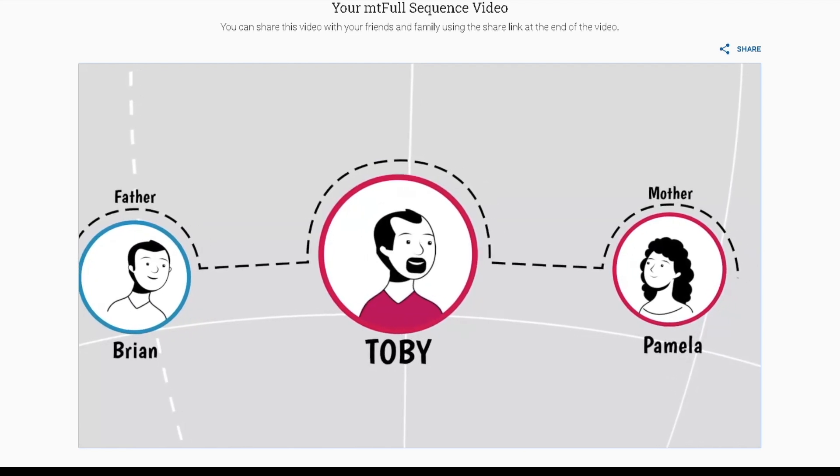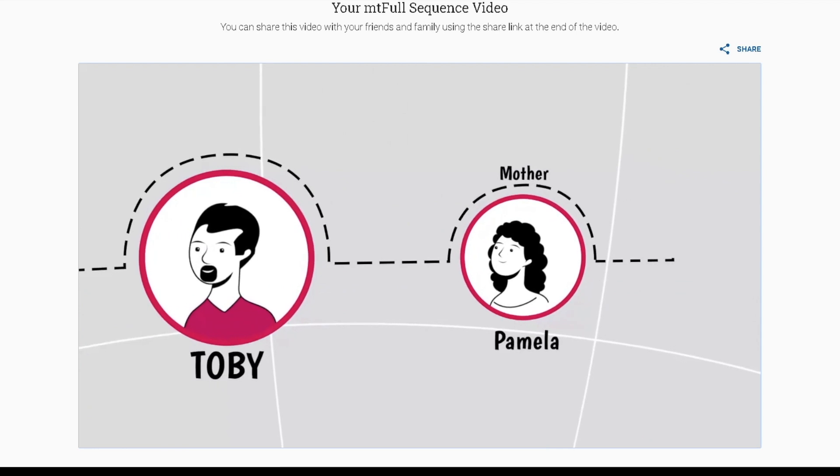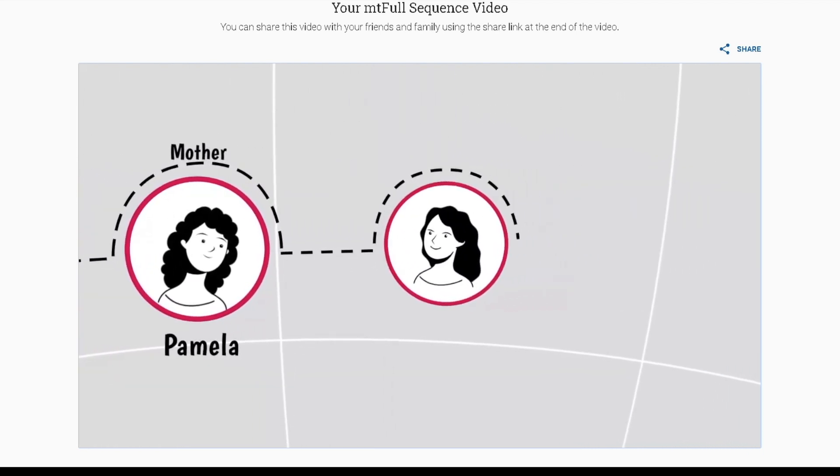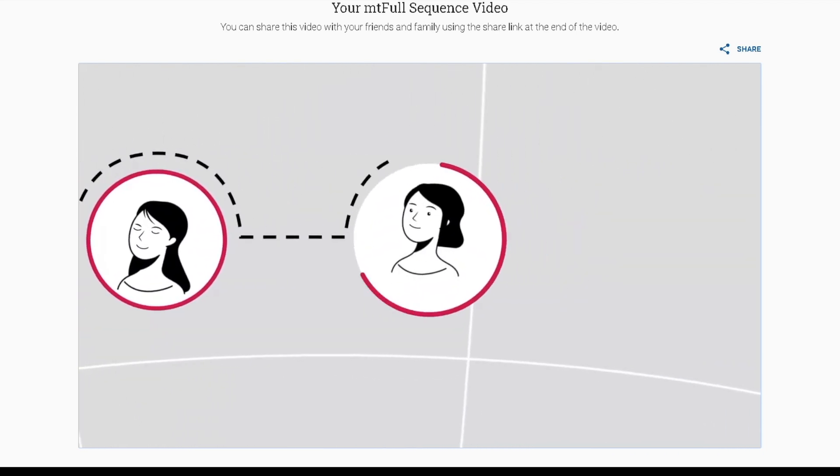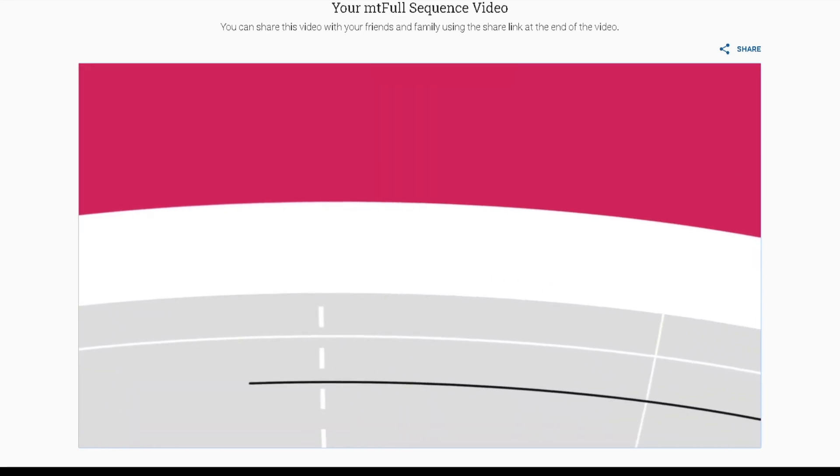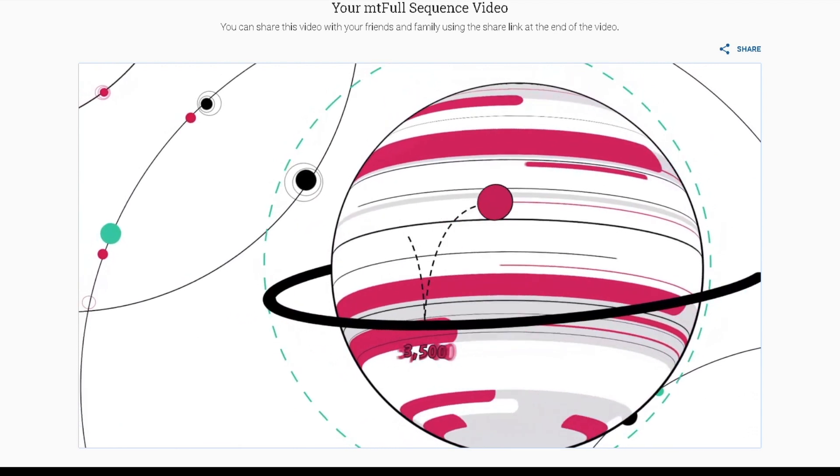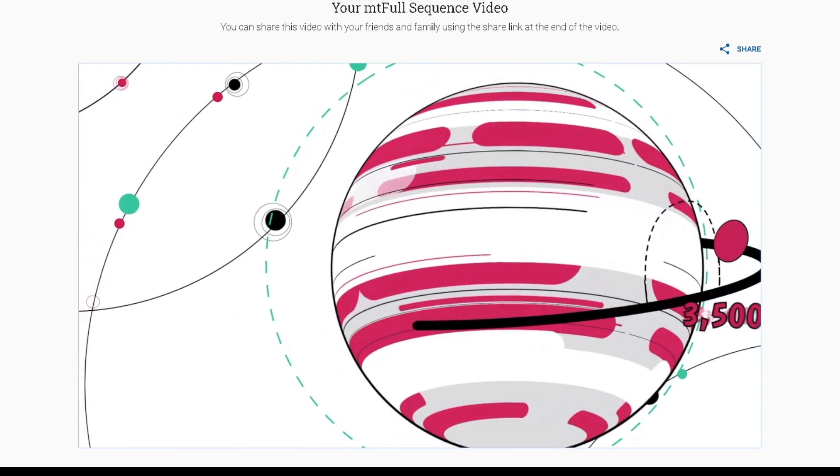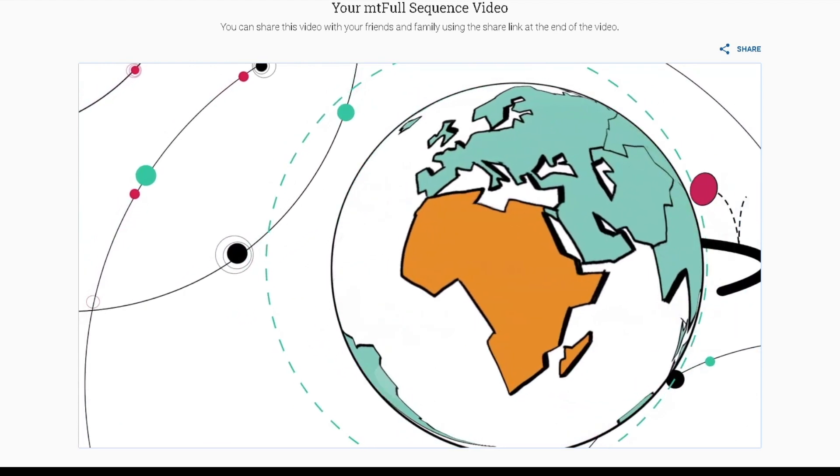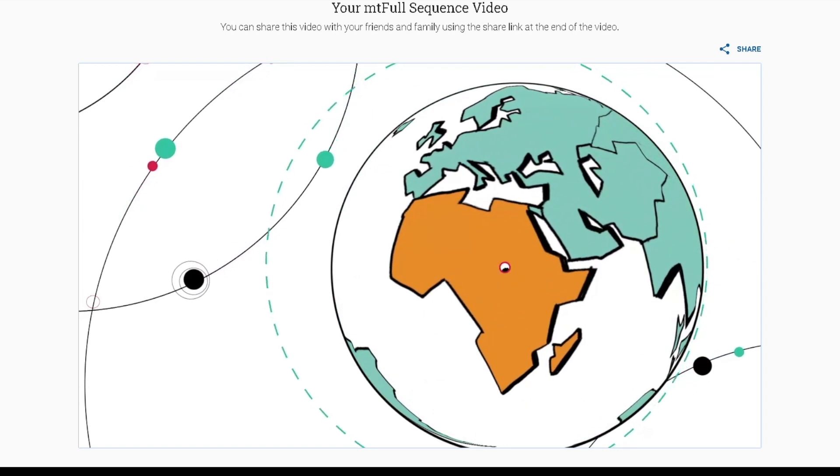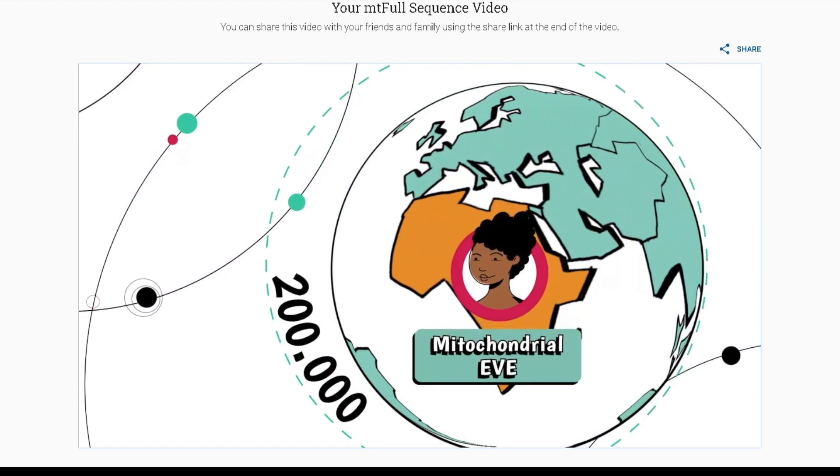While both males and females inherit their mother's mtDNA, only daughters will continue passing it throughout the generations. Tiny changes that occur approximately every 3,500 years allow us to trace one's maternal ancestry back to the most recent common maternal ancestor of all living humans. We all share a single mother around 200,000 years ago.